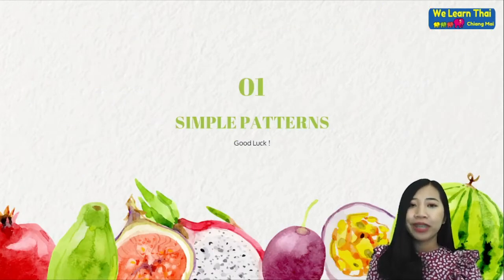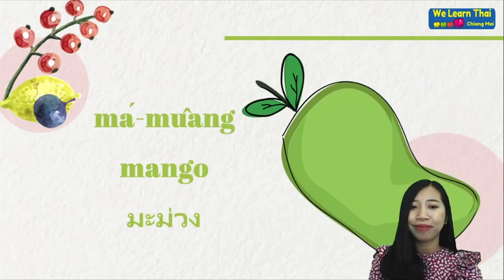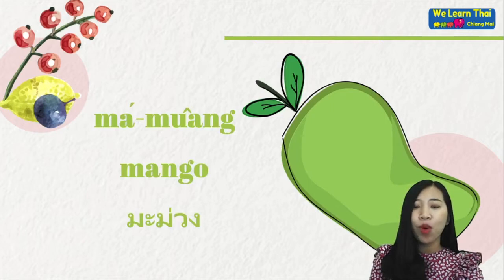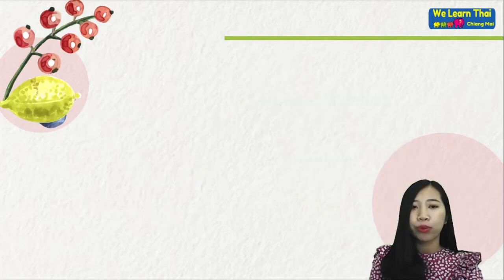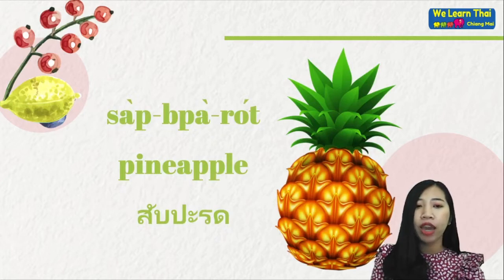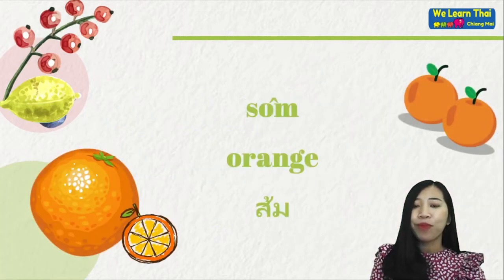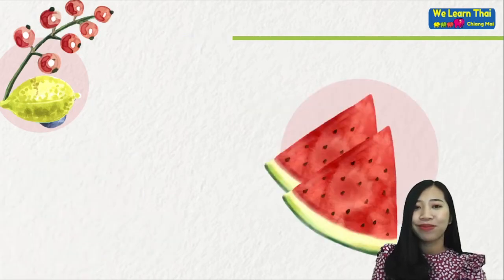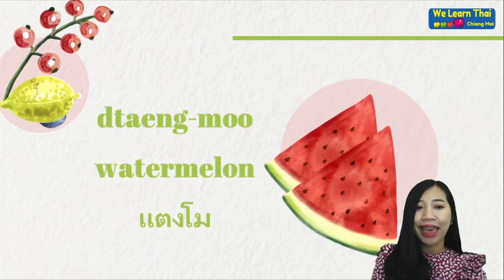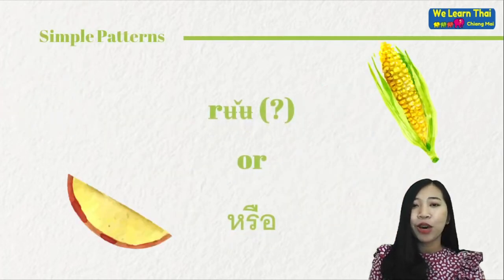For simple patterns, the first one: กล้วย (Kruoi) — banana, มะม่วง (Mammuang) — mango, สับปะรด (Sapparot) — pineapple, Apple, ส้ม (Somm) — orange, แตงโม (Butang Mo) — watermelon. The word 'dr' means 'all'.